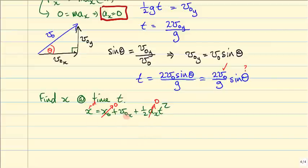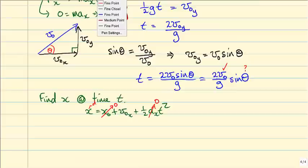And then what else have we got? vx0, well, we can get that from this triangle we just drew. And t is the thing that we just calculated. So let's just go through this and figure it out.